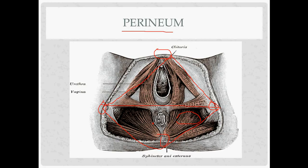The muscles of the perineum are organized into superficial and deep pouches, but the two most important ones are the bulbospongiosus, running along the sides of the vaginal opening, and the transverse perineal muscles coming in from the sides.